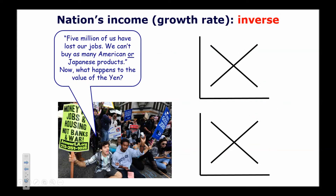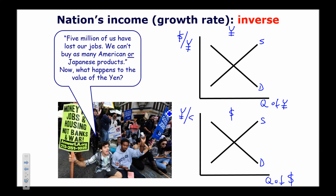The exact opposite occurs if the US is in recession while the rest of the world is not. We draw the yen and dollar markets again. Since we've lost our jobs, we're not buying as many foreign goods, including Japanese goods — so we decrease our demand for yen, which depreciates the yen. At the same time, we decrease the supply of US dollars in the foreign exchange market, which appreciates the US dollar. This again demonstrates the inverse relationship: our income went down, but the value of our currency went higher.